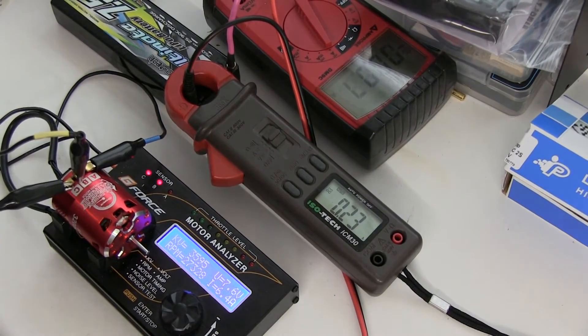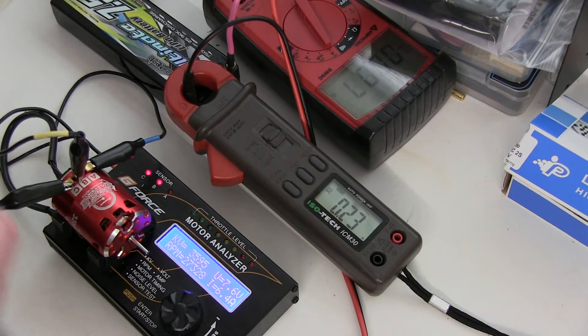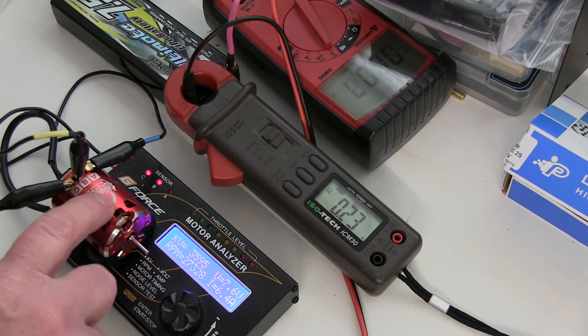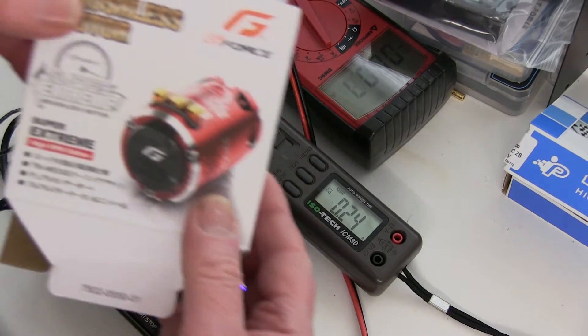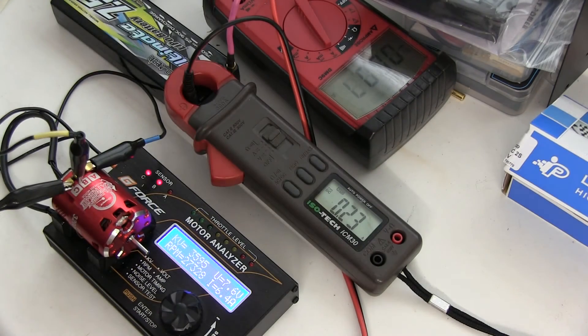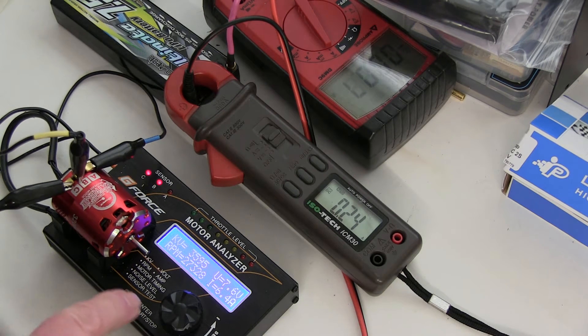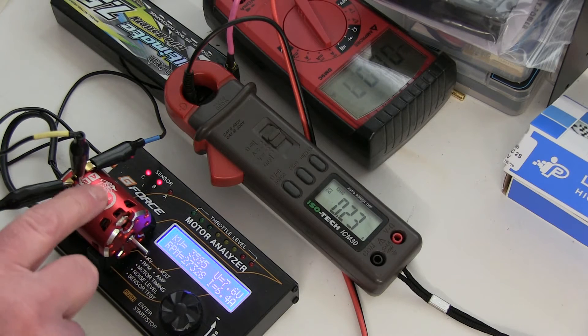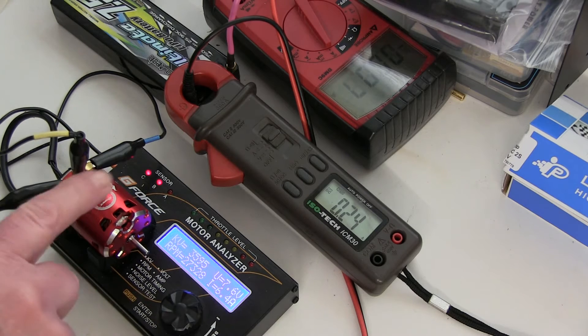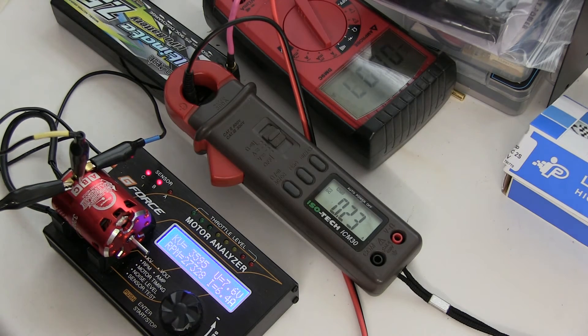When setting up a 1s blinky mode motor using a 1s lipo 13.5 turns, such as this G-Force Super Extreme 13.5, it's very difficult to set the sweet spot, the optimum point. The optimum point is about 6 to 7 amps when running on a 2s battery, so it's very difficult to set it on a 1s battery because the current is half.